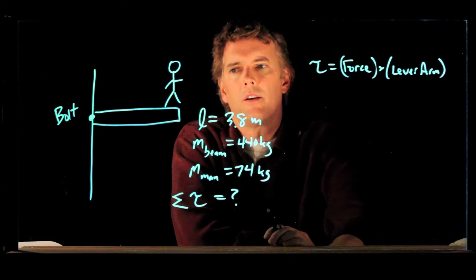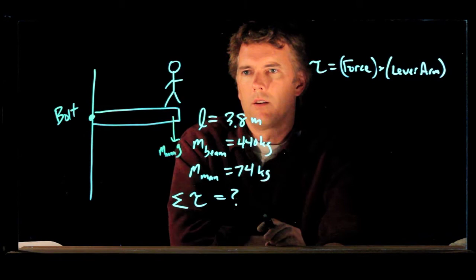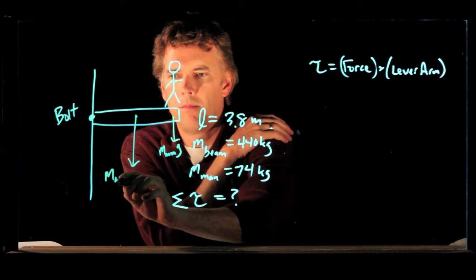In this case, there are two forces at work. There is the mass of the man times g going down, but there is also the mass of the beam times g going down.